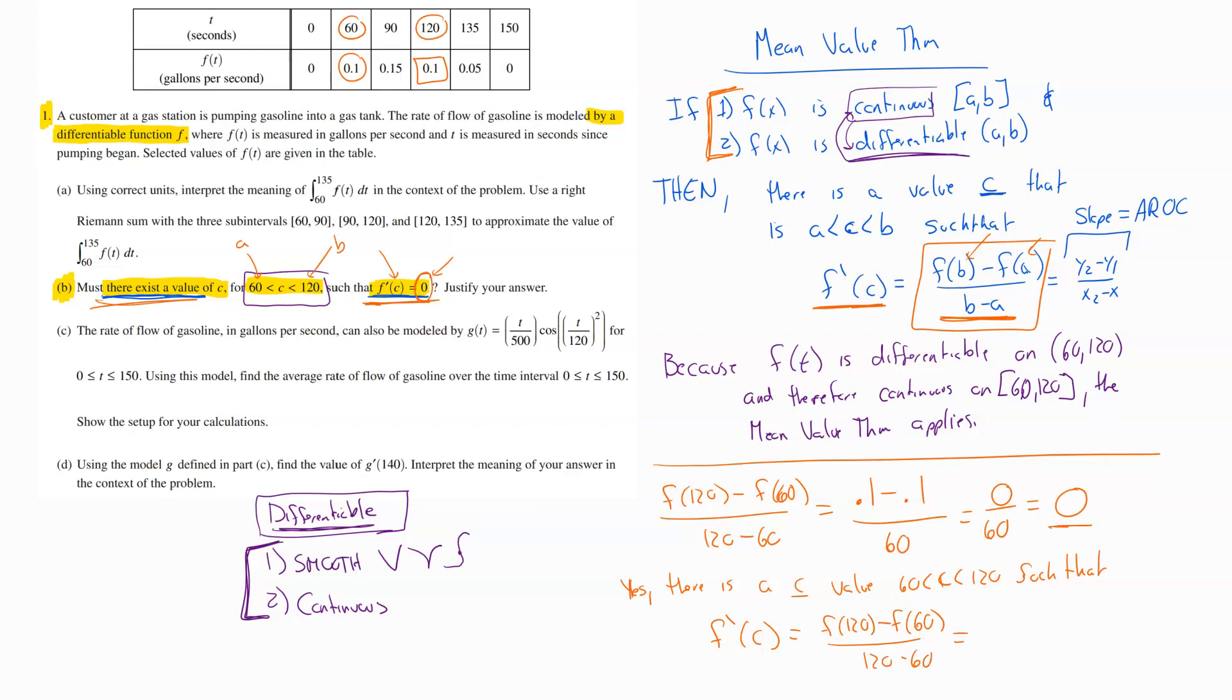such that f prime of c is equal to f of 120 minus f of 60 all over 120 minus 60, which is equal to what we said, 0. And again, throw a little by the mean value theorem at the end there.